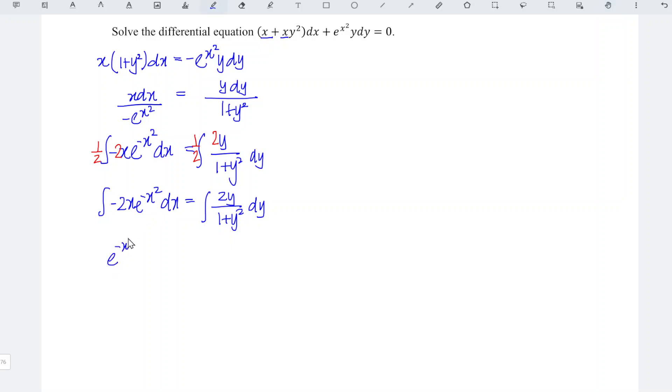e to the power of negative x square, remember to add the constant c for the x term. And equal to, when we integrate this standard form, so ln(1 + y²).